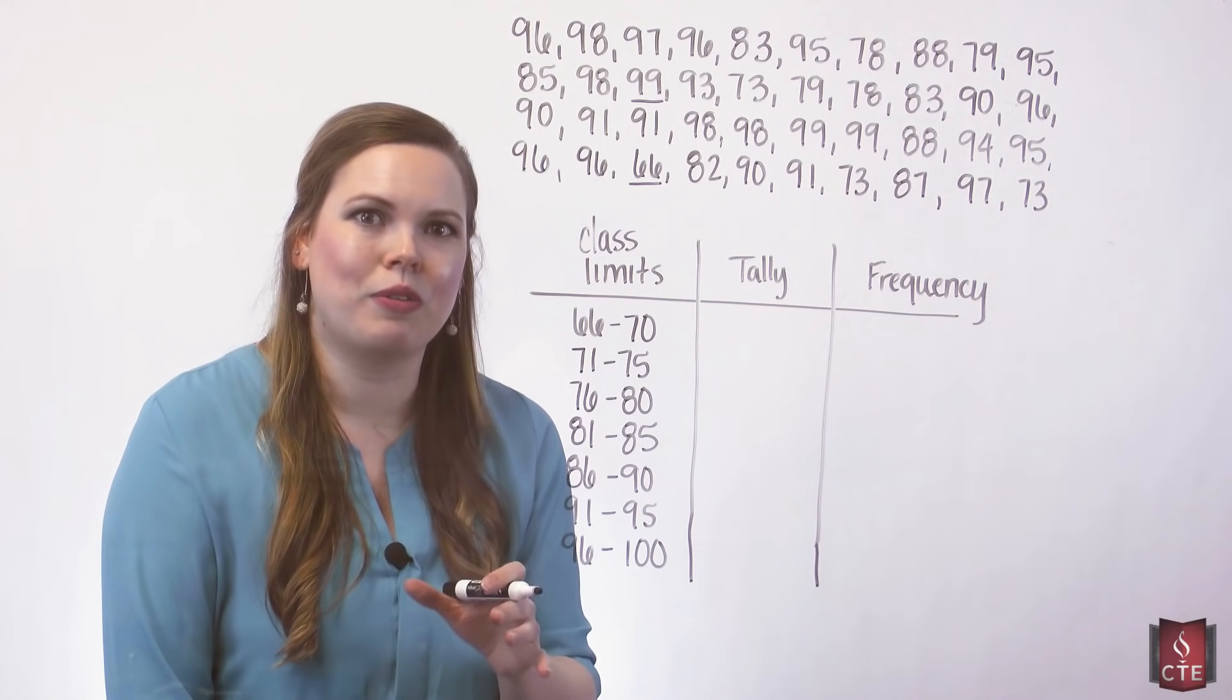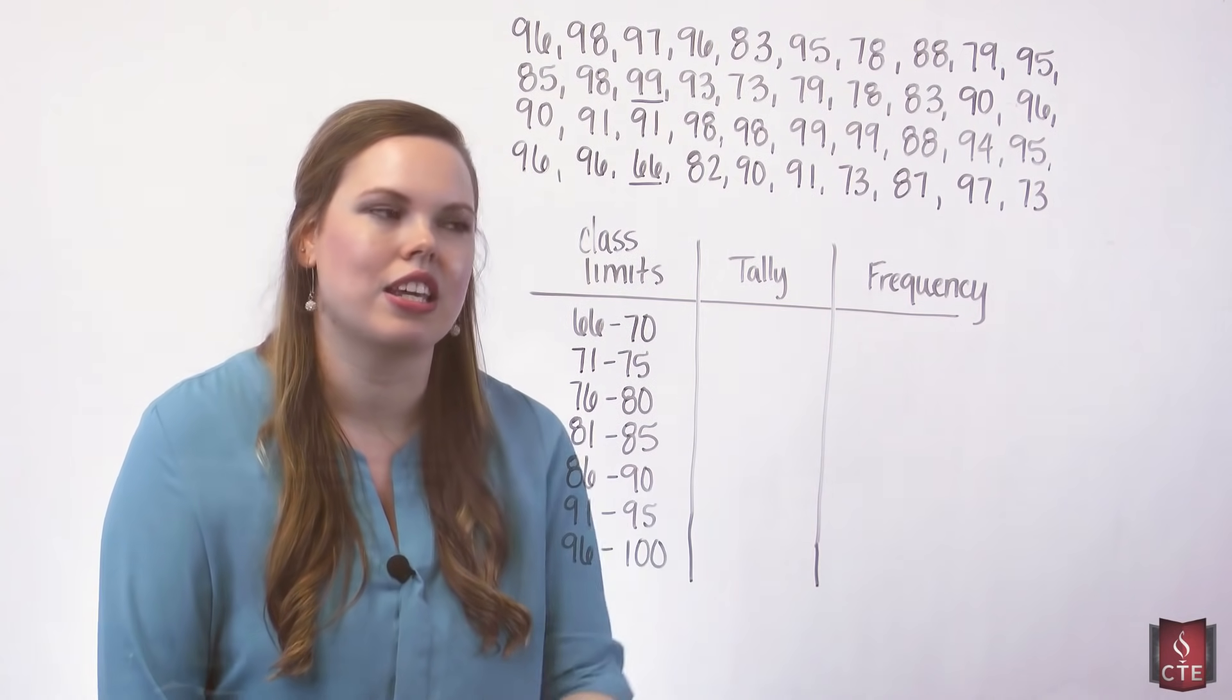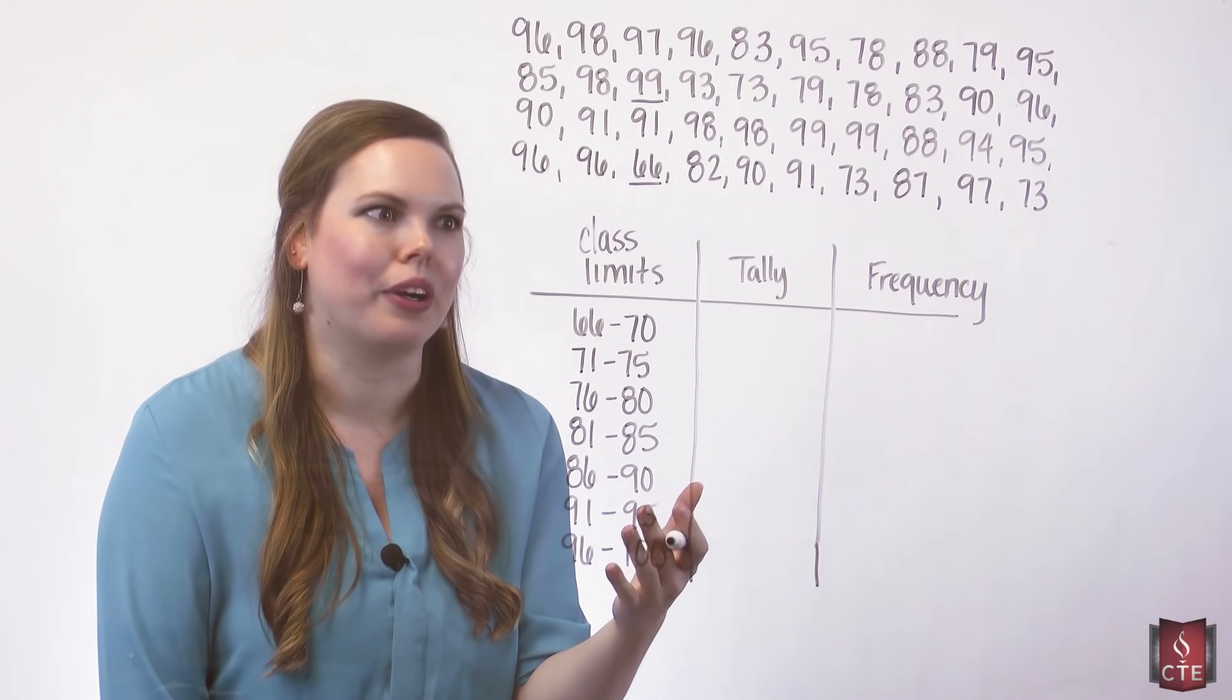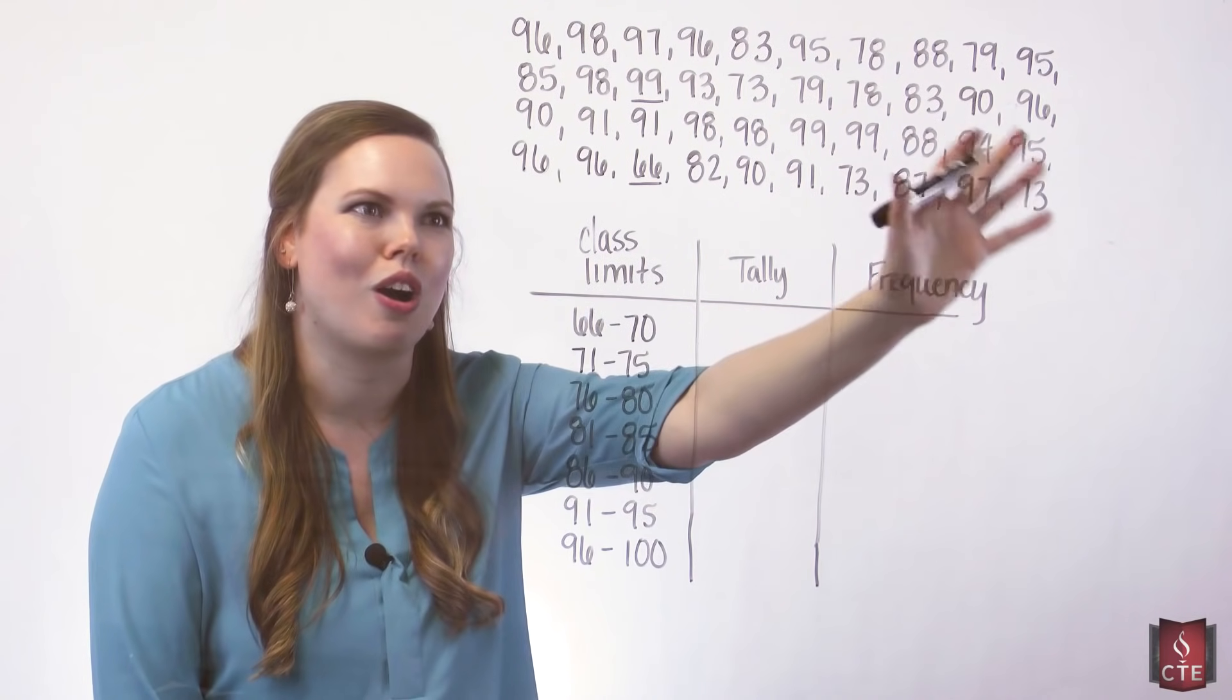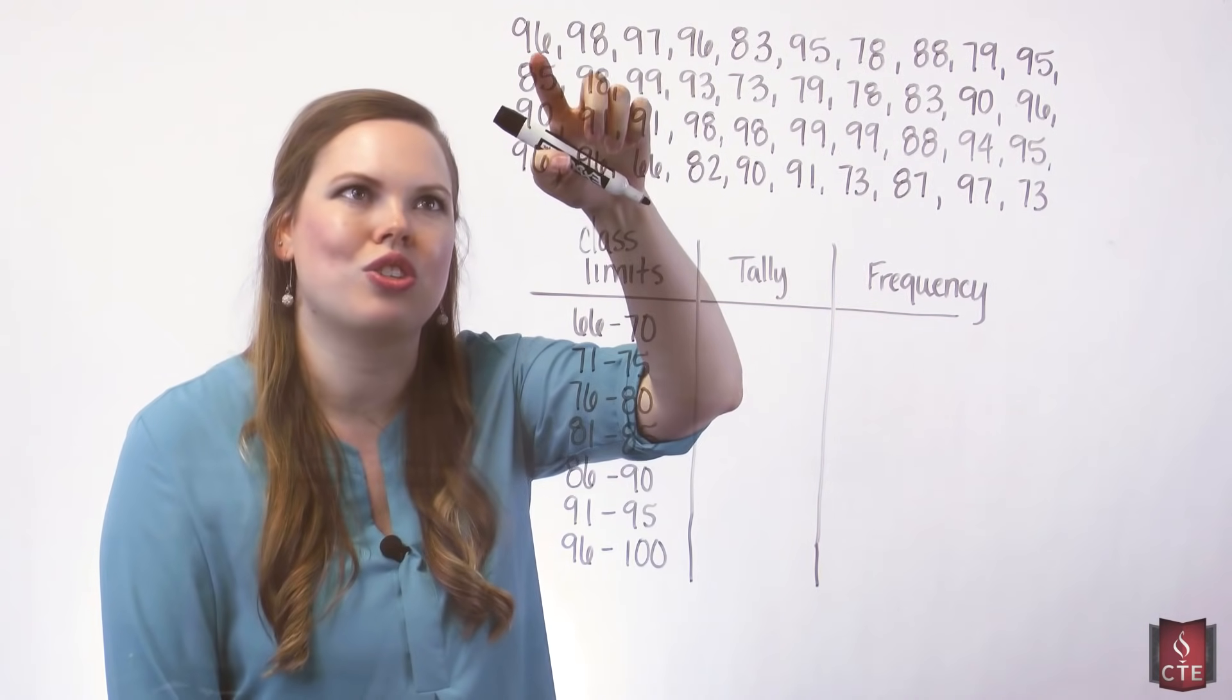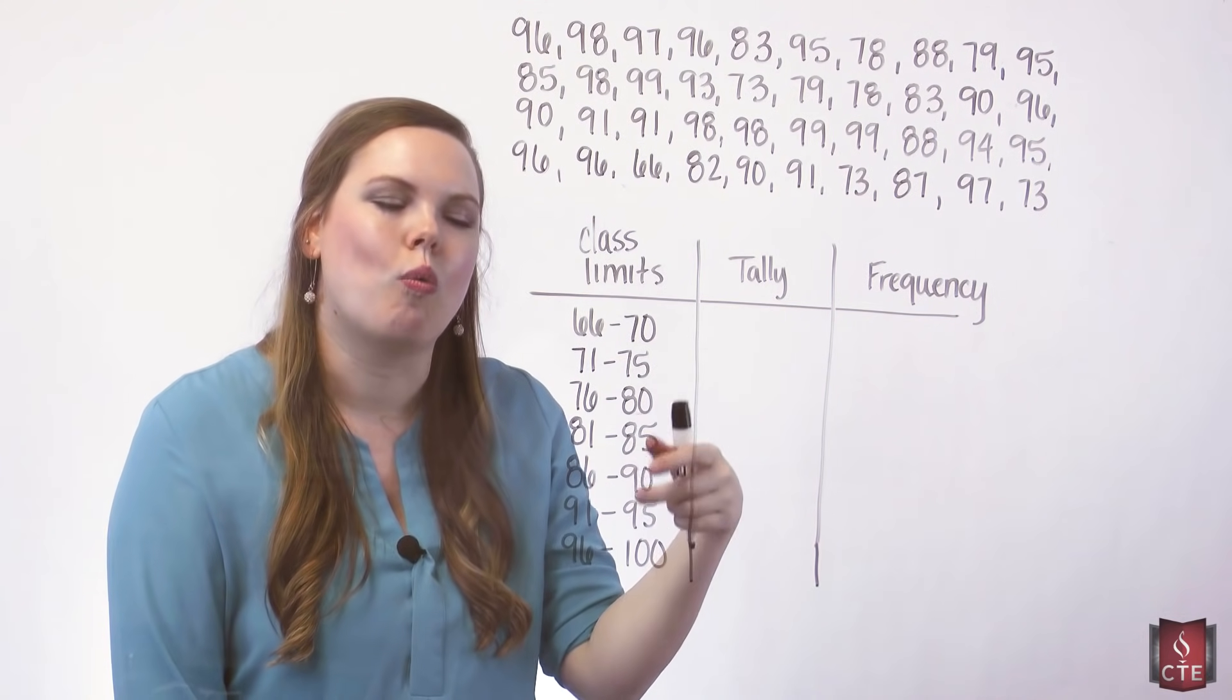So a frequency distribution, just a simple frequency distribution, has the class limits and then the frequencies. We're using the tally column just to make our life simpler. And it's how we arrange our data into this. Taking this raw data and arranging it into this frequency distribution. I think the best way to do this is just to start right here with your first data value and putting a tally where it lands.